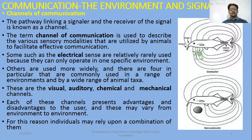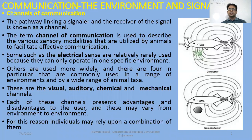In the environment and signal design, we have discussed the electrical channels — that certain animals communicate with each other with the help of electrical signals or electrical sense. In the aquatic environment, they use the lateral line system, amphibians and fishes. Some such as electrical sensors are relatively rarely used because they can only operate in one specific environment, that is the aquatic environment. And other ways of communication are widely used, and there are four in particular that are commonly used in a range of environments.